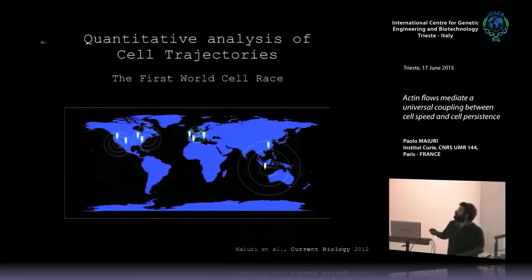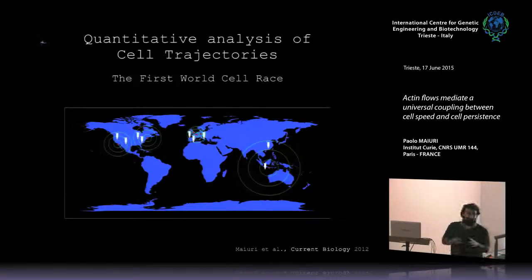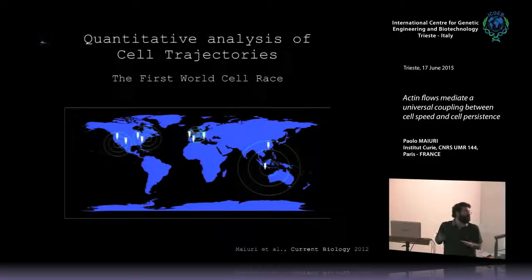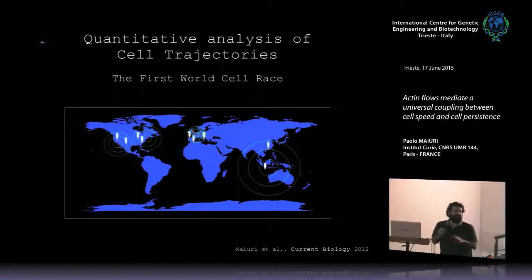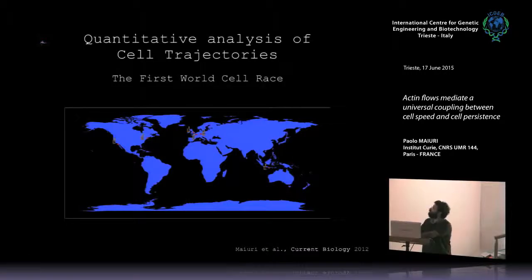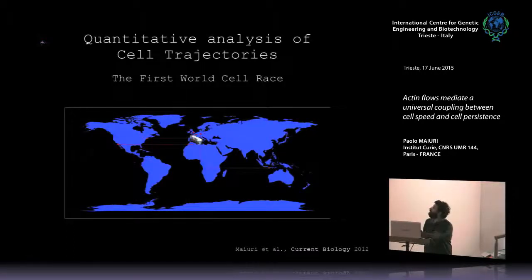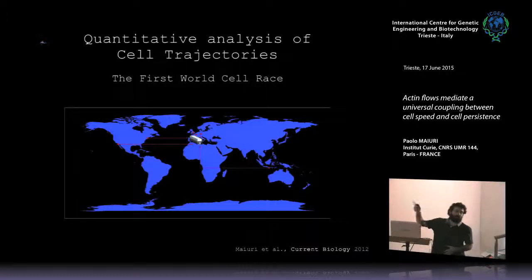How was the race organized? Six Nikon centers around the world collected samples. The idea was that people from different labs just sent their cells to the center and tried to win the challenge and to be the fastest cell in the world. In the different Nikon centers, they visualized the cells in the standard device I just showed you, and after they all sent the data to Paris, where I analyzed it.